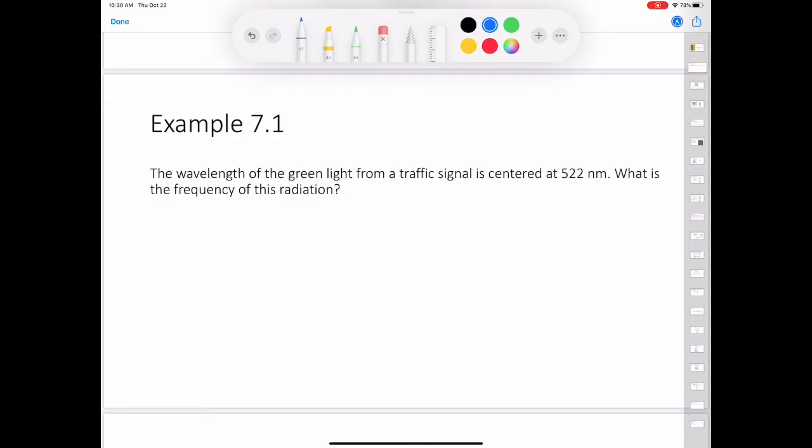Let's try an example problem. The wavelength of the green light from a traffic signal is centered at 522 nanometers. What is the frequency of this radiation?